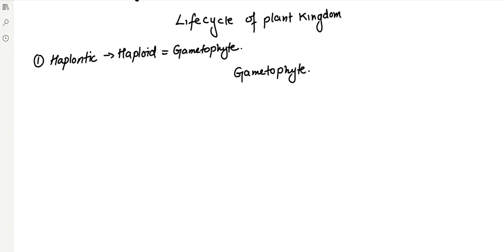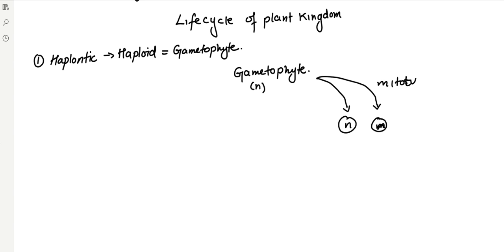This gametophyte plant wants to go for sexual reproduction. It is haploid in nature, and for sexual reproduction it needs gametes. If you want to form a haploid structure from a haploid organism, you go for mitotic division. So we will have a mitotic division here, and with the help of that we get two haploid gametes.